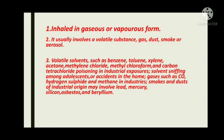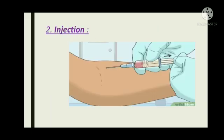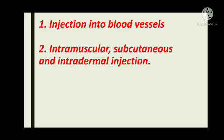Smokes and dusts of industrial origin may involve lead, mercury, silicon, asbestos, and beryllium. Secondly, injection — including injection into blood vessels, intramuscular, subcutaneous, and intradermal injection.